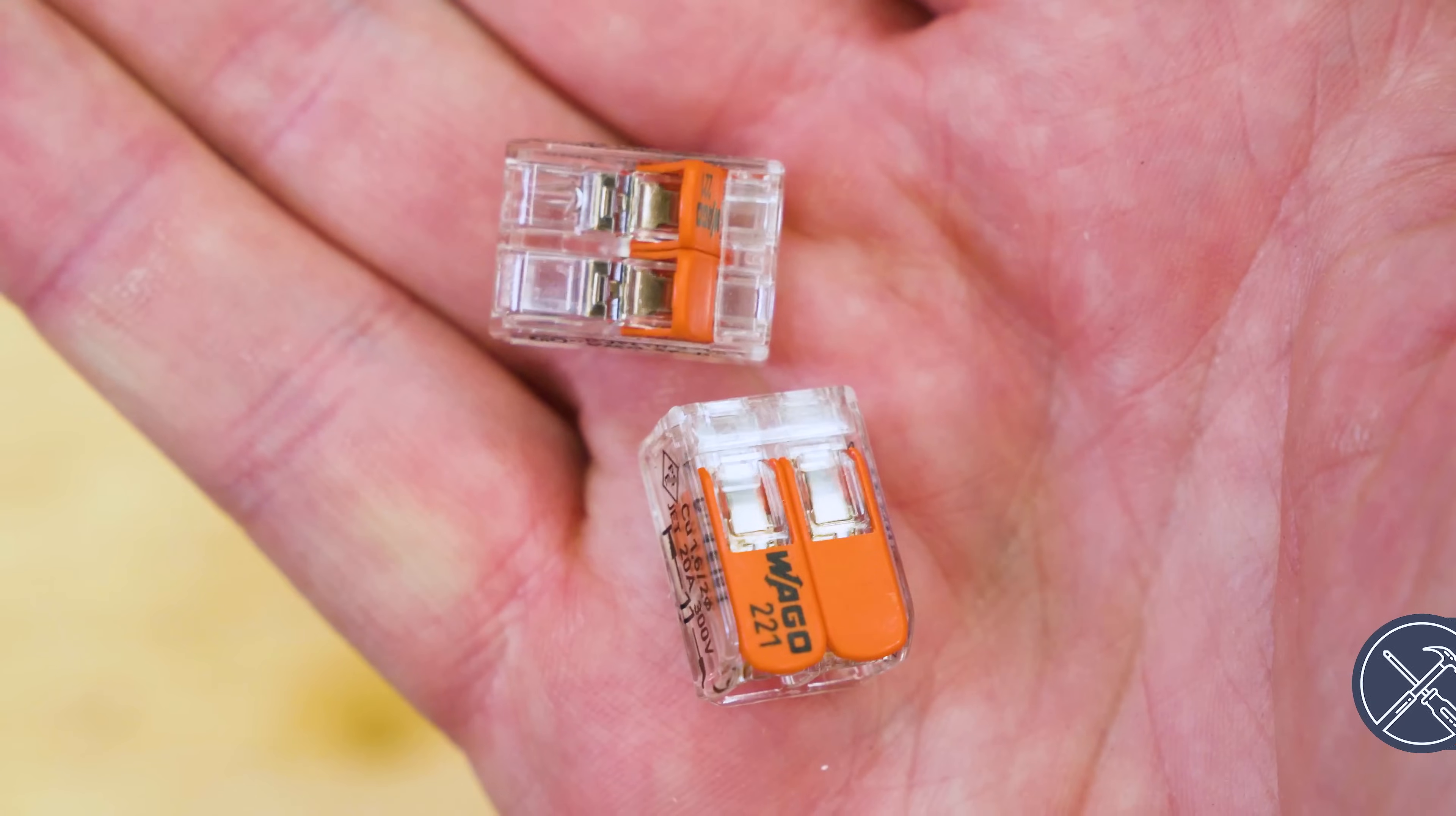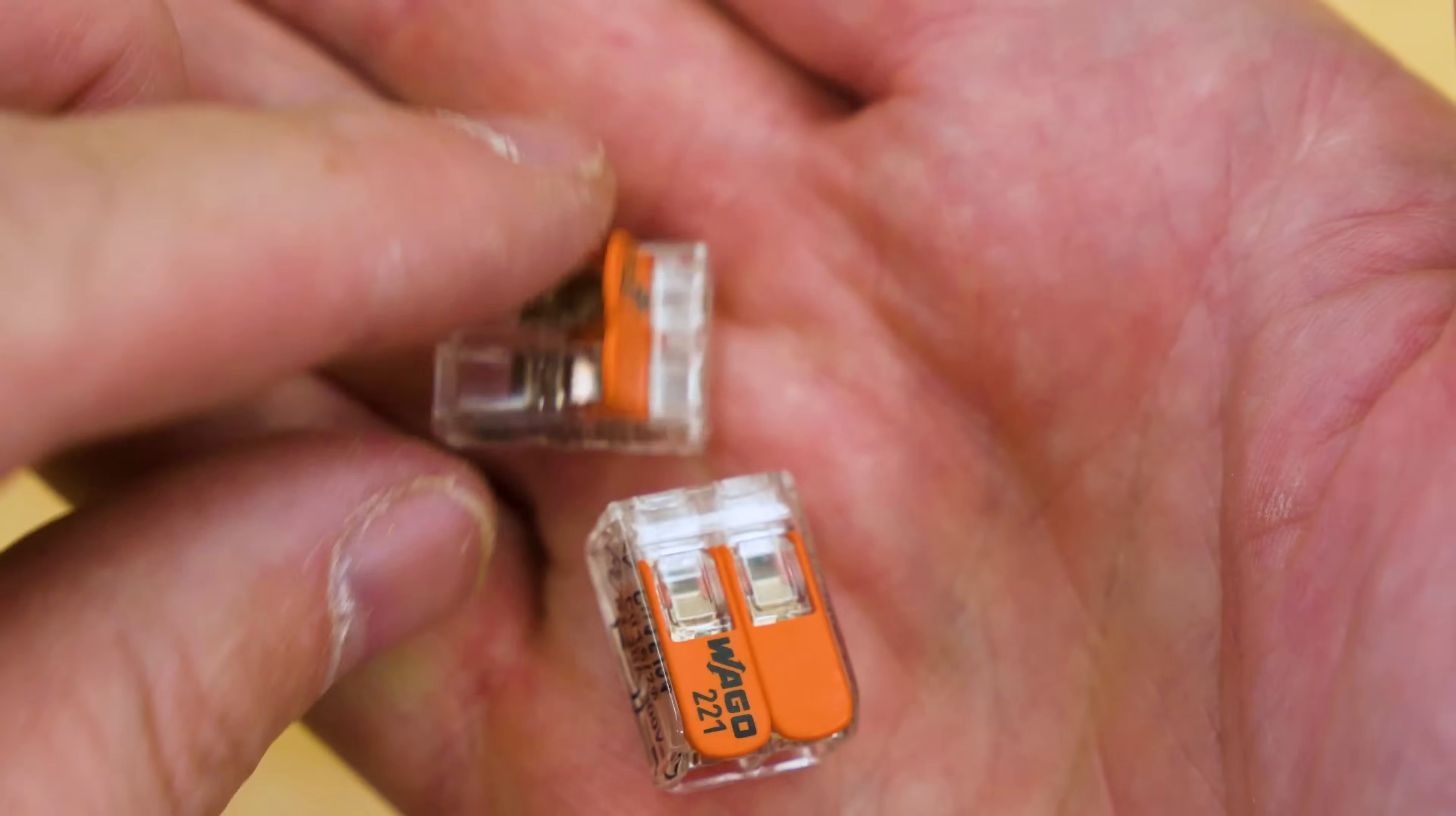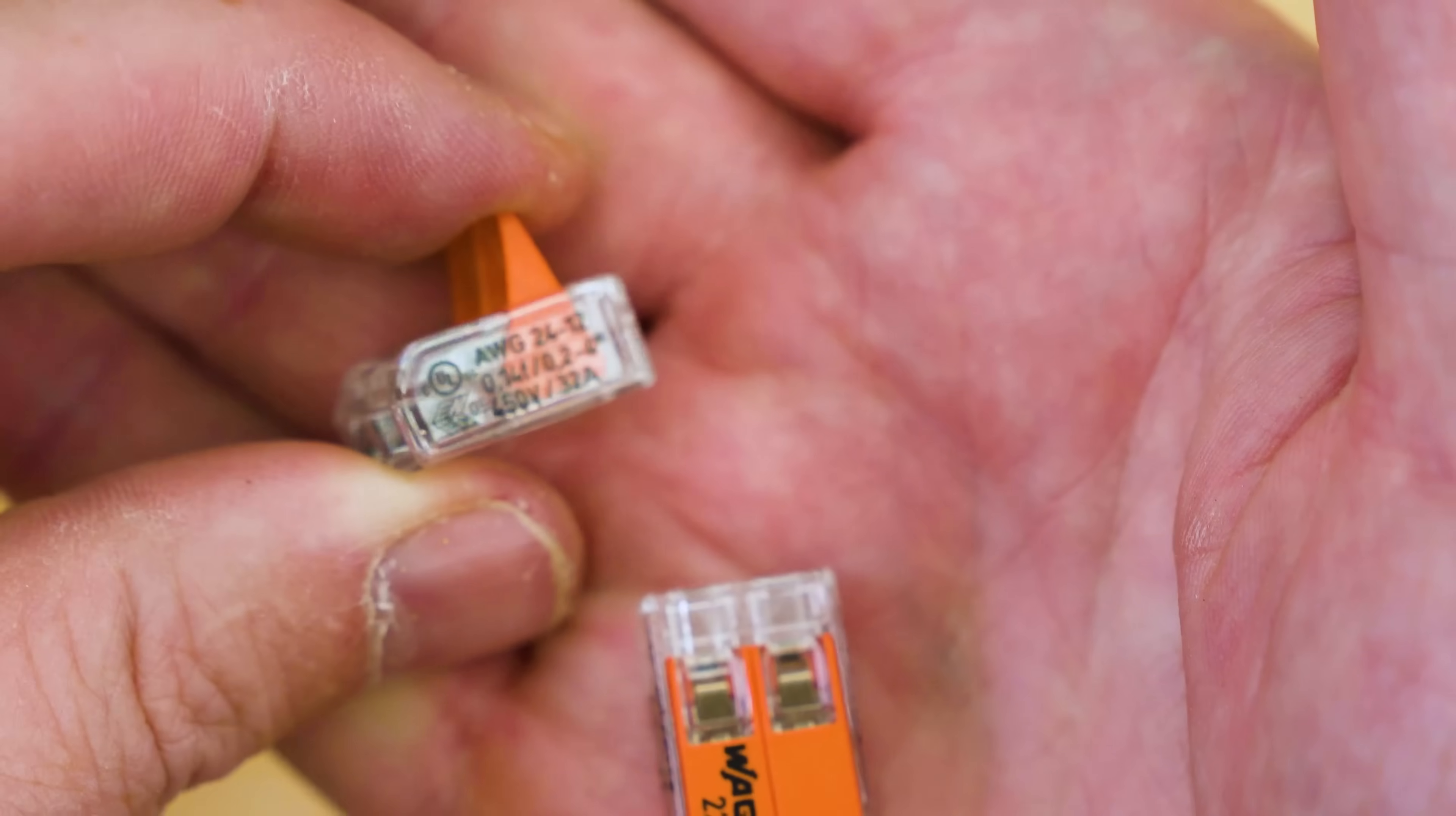Moving up from there, we have what's called the WAGO connector. Now this is a little electrical clamping device that can handle most size gauges and you can fit them in there, push down the lever, clamp it in. And then once it snaps in like that, it is secure and solid and ready to go.